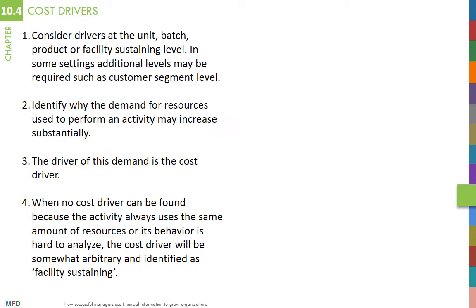Cost drivers are the reason why the cost of performing an activity varies. A change in the level of a cost driver prompts a change in the amount of resources spent to perform an activity. For activities made up of variable indirect costs, the cost drivers are often clear — they cause the variation in the level of activity. For example, energy is often a variable indirect cost that fluctuates with machine hours. It's a cost driver.